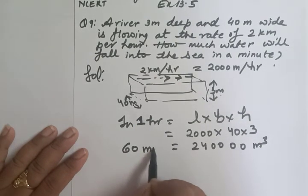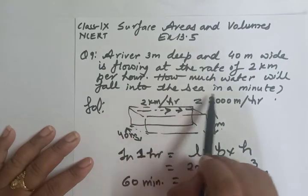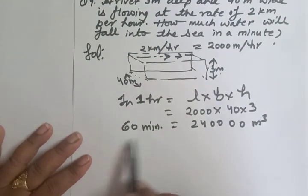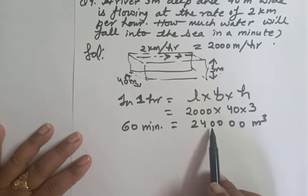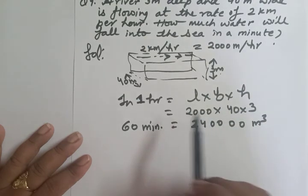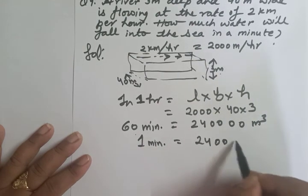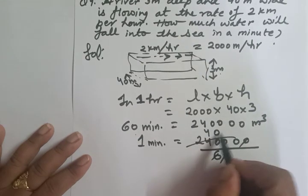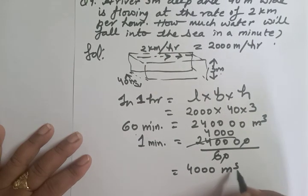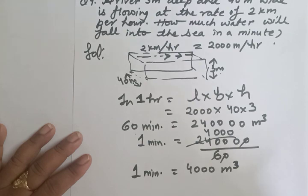1 hour equals 60 minutes. We want the water flowing in 1 minute. So we divide: 240,000 ÷ 60 = 4000 cubic meters. Therefore, 4000 cubic meters of water falls into the sea per minute. Thank you.